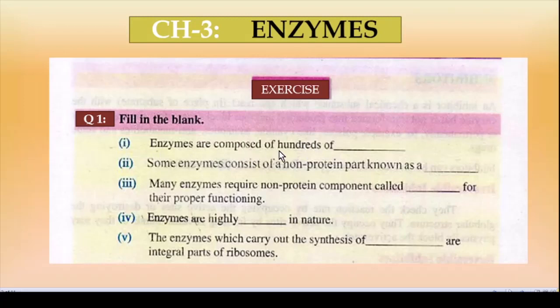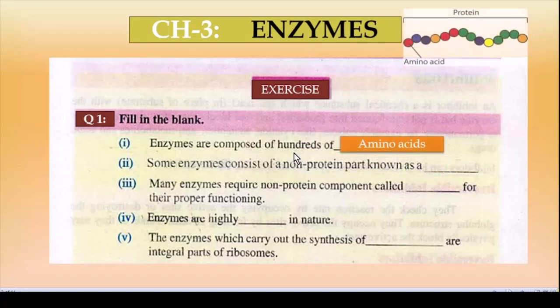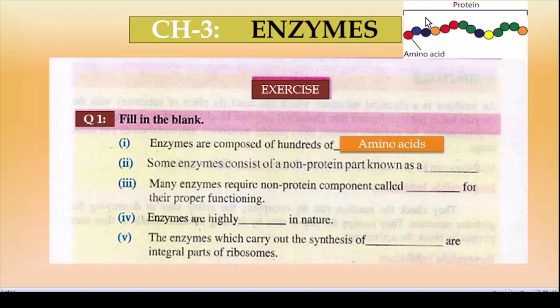Blank 1: Enzymes are composed of hundreds of dash. Enzymes kya hain? Hamare paas catalyst hai jo bane hain protein se. Yahan par statement hai 'composed of hundreds of' — obviously hundreds of protein se toh nahi bane. Protein hamare paas bani hai amino acid se, isliye subunit hai amino acid.